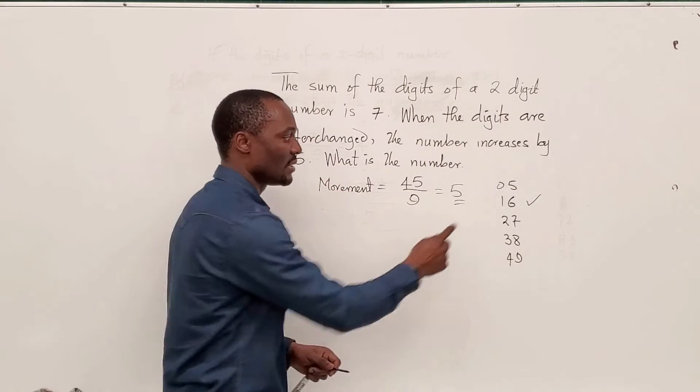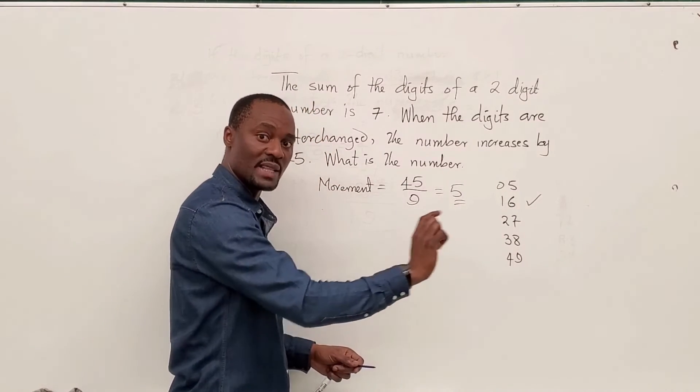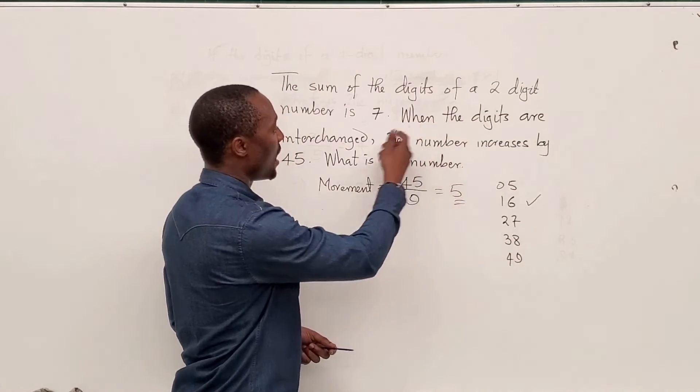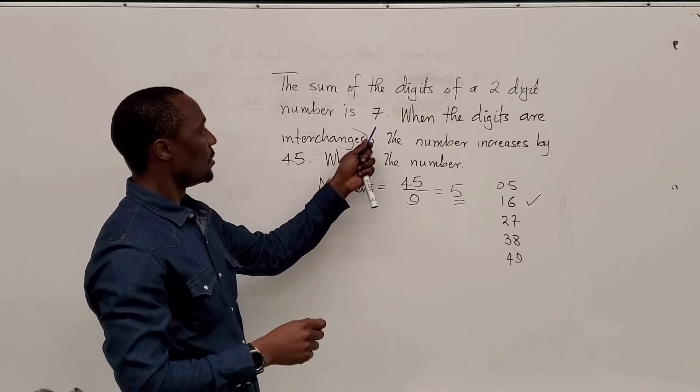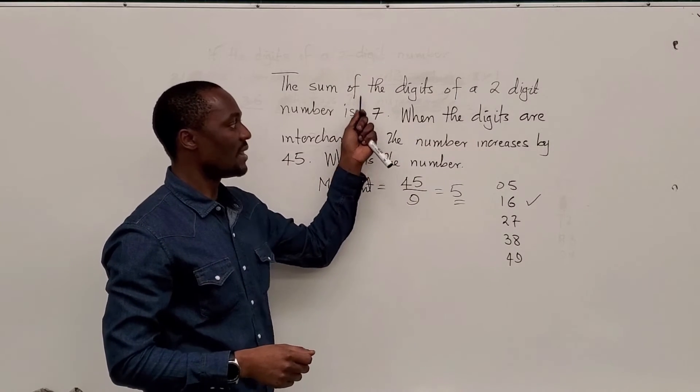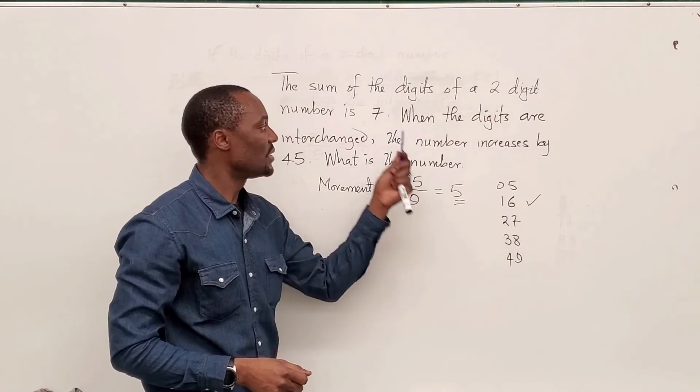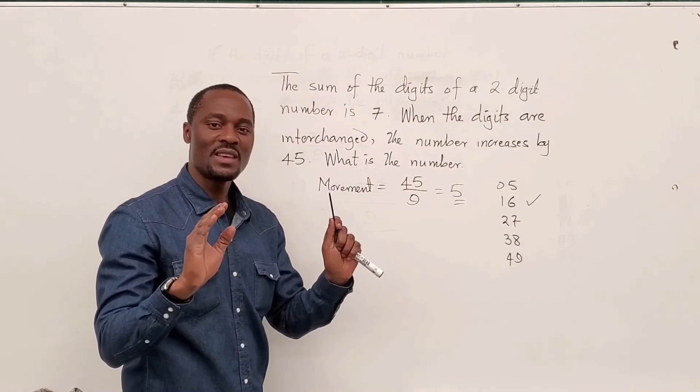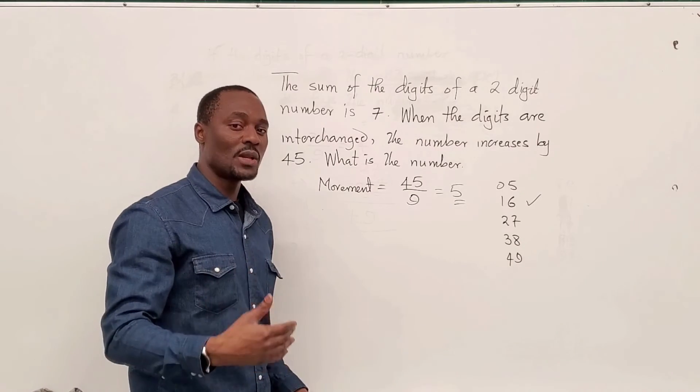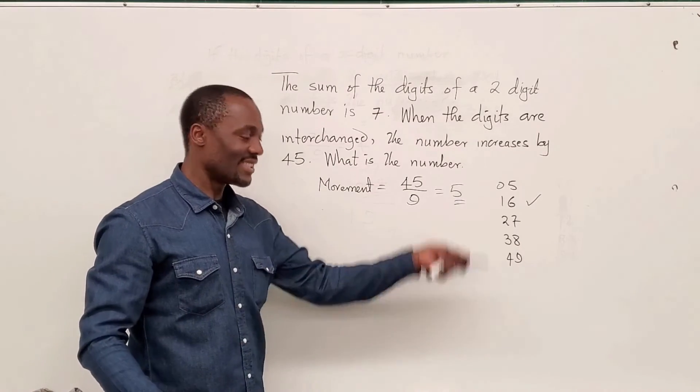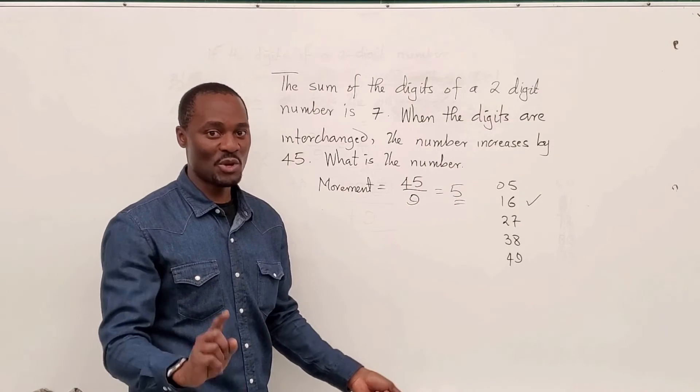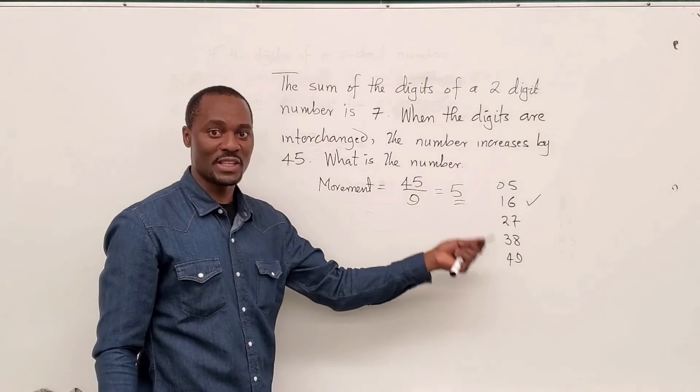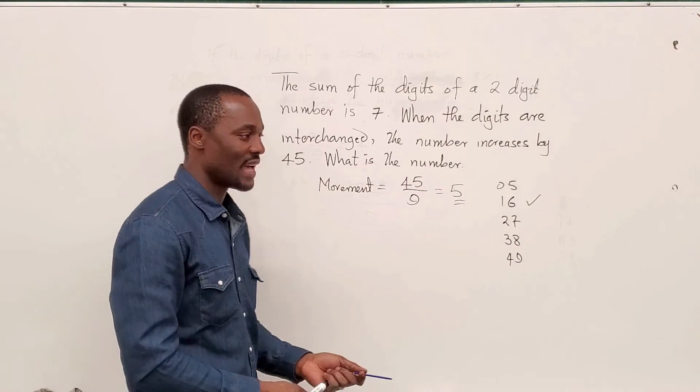It's 45 divided by nine and use it to determine the combination of digits. Zero, five, one, six, because the difference between the two has to be five. That's what you call the movement. And then the next thing is you find which one will satisfy the first sentence or any other information provided, which is the sum of the digits being equal to seven. That is the trick way, the quick way. But the actual algebraic way is just an expansion of this. And I'm going to show you what we actually do, which will lead us back to this fast way.